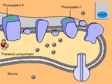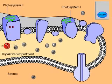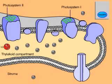Photosystem 2 replenishes its electrons by splitting water. Hydrogen ions and oxygen are released into the thylakoid compartment. This is where the oxygen gas generated by photosynthesis comes from.